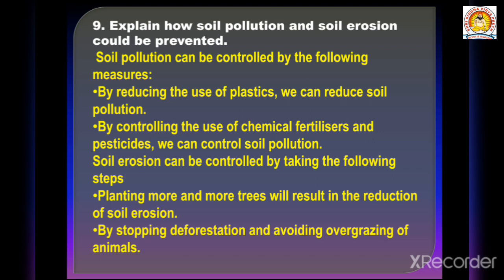We can reduce soil pollution by reducing the use of plastics, and by controlling the use of chemical fertilizers and pesticides. Soil erosion can be controlled by planting more and more trees, stopping deforestation, and avoiding overgrazing of animals. By these measures we can prevent and control the problems of soil pollution and soil erosion.